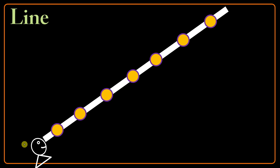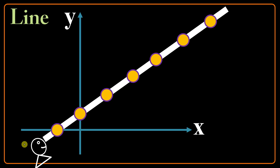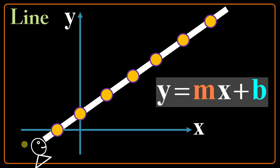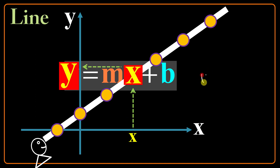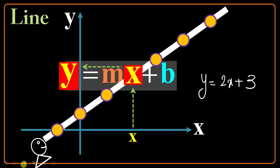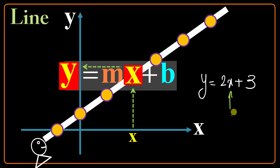Now let's put a Cartesian coordinate here to make an algebraic expression for the line. The algebraic expression for a line could be something like y equals mx plus b. This equation really works like a machine — it has an input like x and an output like y. For example, y equals 2x plus 3. If I give x the value 1, I will get y to be 5. So the point x equals 1 and y equals 5 will be on this line.